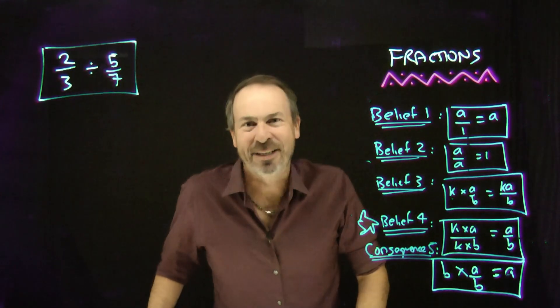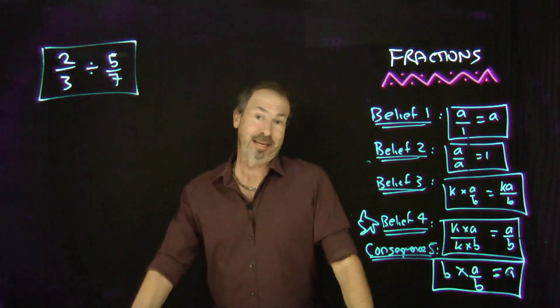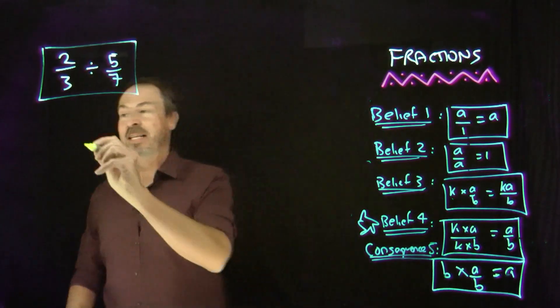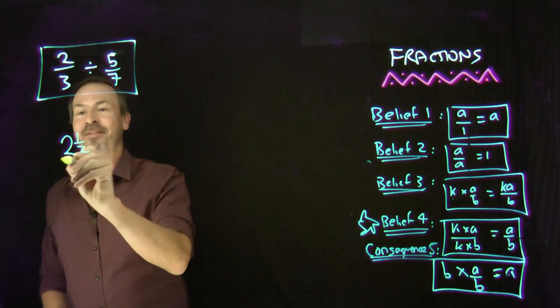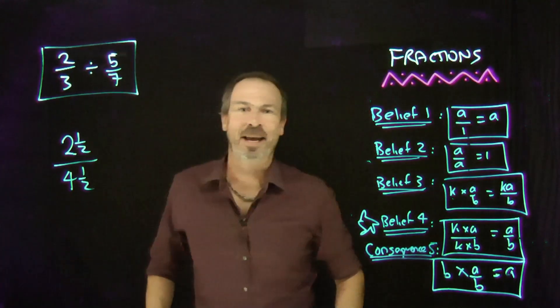But actually, let me get to it in an easier way by first doing some mixed number divisions. For example, let's look at say 2 and a half divided by 4 and a half. Let's see if we can work that out.